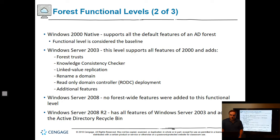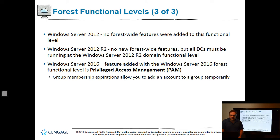Windows 2000 native supports all the default features of an AD forest and is considered the baseline — the very first Active Directory version. Windows 2003 adds forest trusts, KCC link value, and other features. Server 2008 had no forest-wide features added, but 2008 R2 adds the recycle bin. Windows 2012 had no major changes, and 2012 R2 requires all DCs to run 2012 R2 domain functional level. Windows 2016 adds privileged access management and group membership expiration.